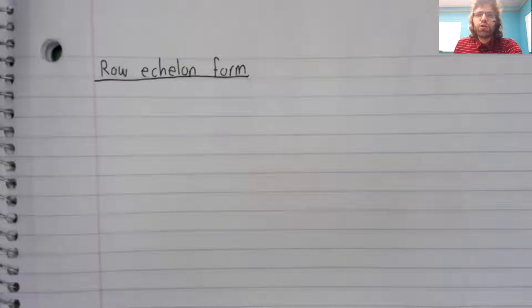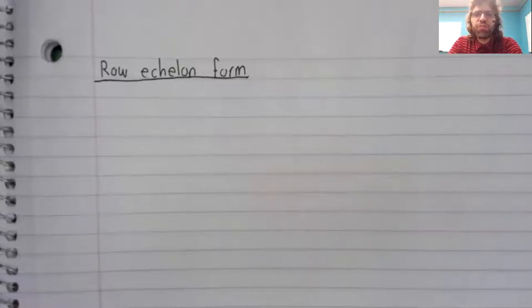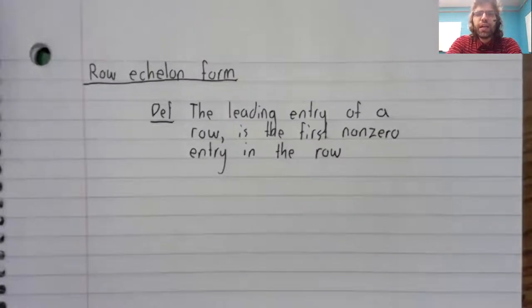To define row echelon form, we need a quick preliminary definition. The leading entry of a row is the first non-zero entry in that row, reading from left to right. So, for example,